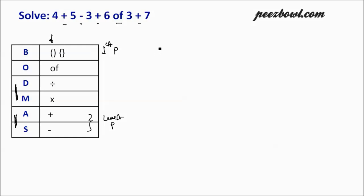Let us rewrite this example. We have 4 + 5 - 3 + 6 of 3 + 7. As per the BODMAS table, 'of' has second priority, so we need to solve 'of' first. 'Of' is nothing but multiplication. That is 6 of 3, which is 6 multiplied by 3.